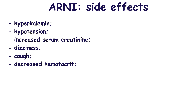Hyperkalemia is a frequent side effect of sacubitril-valsartan use, as both sacubitril and valsartan cause increased serum potassium. Also, hypotension can occur. It results from reduced serum aldosterone level, blockade of angiotensin-2 receptors, increased diuresis, reduced sodium level, and elevated potassium level. Other side effects include increased serum creatinine, dizziness, renal failure, cough, decreased hematocrit, and orthostatic hypotension.